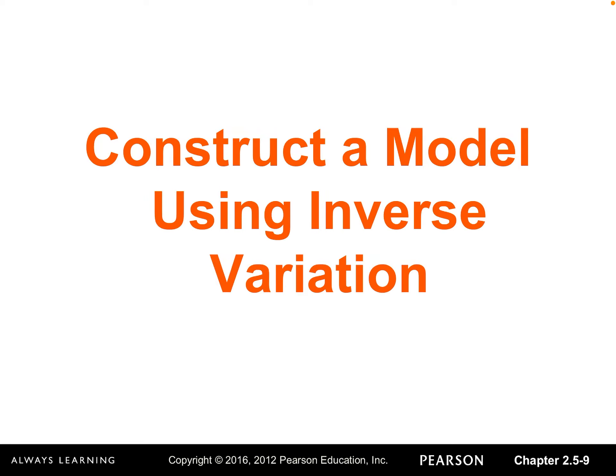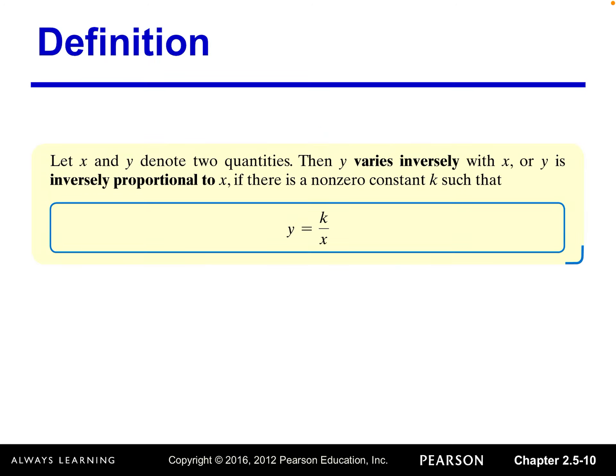Now, let's look at inverse variation. Let x and y denote two quantities. Then y varies inversely with x if there is a non-zero constant k such that y equals k divided by x. k is called the inverse variation coefficient.